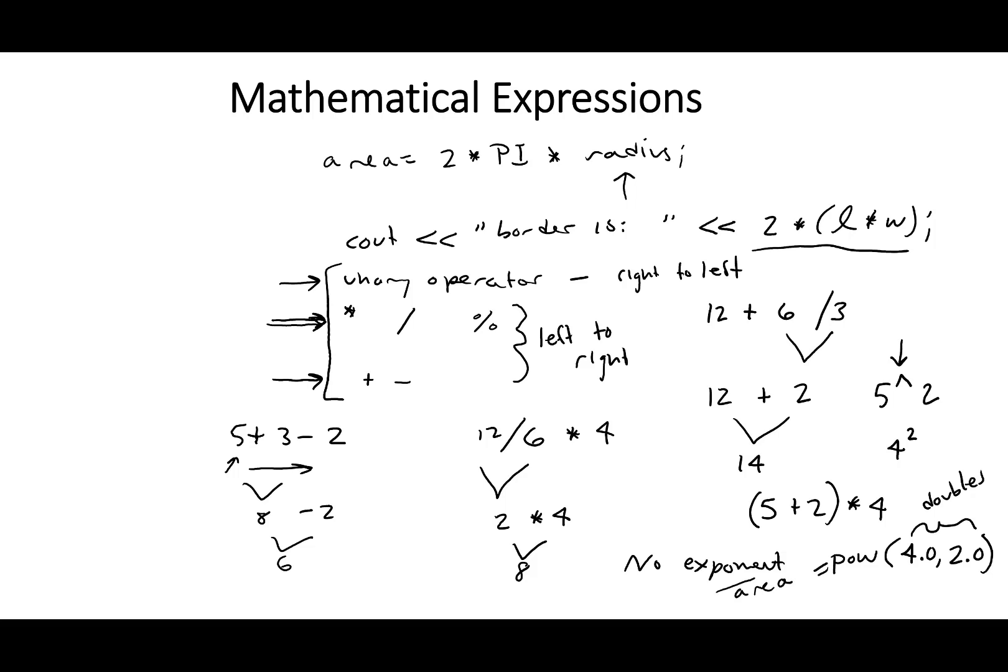and then it's going to return a value, and we can store the return value to a variable. So, like, in this case, if we said area is equal to pow, and then we send it 4 and 2, this is going to return 4 squared, and it's going to save it to this variable area. So I'm just going to put return value here. To use this pow function, we need to use the header C math. So this would be pound include C math. And we're going to learn about some more mathematical functions there in the C math library a little bit later.